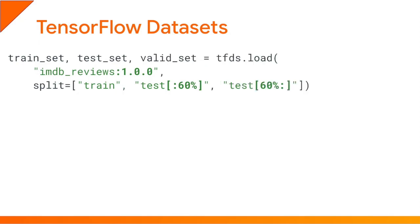Each split is represented as a TensorFlow dataset using the tf.data API. By default, each instance is represented as a dictionary containing all the input features, and if it's a supervised learning task, the dictionary also contains the labels. In this case, you may find it more convenient to have each instance represented as a tuple pair containing the input features on one hand and the labels on the other. To do this, you must specify as_supervised=True.